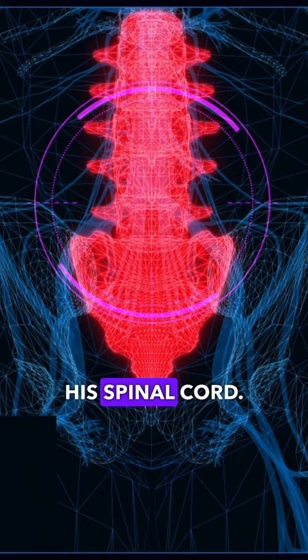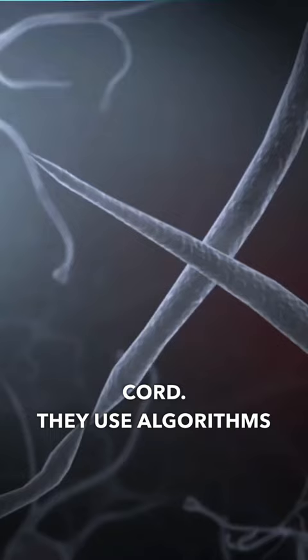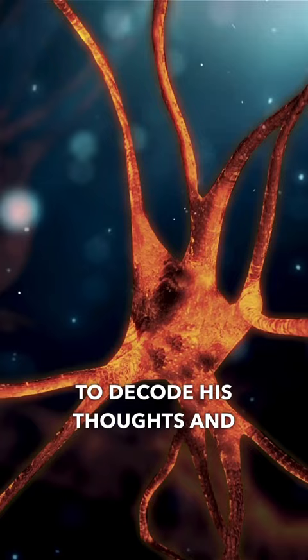AI-powered implants are like a digital bridge that connects his brain and spinal cord. They use algorithms to decode his thoughts and send signals to his lower spine to move his legs.